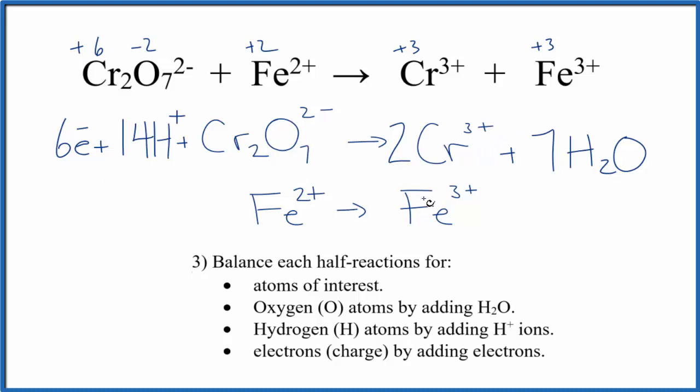Over here, we have a 2+ and a 3+. So let's add a negative charge, just one electron. And then that will give us 2+ on this side, 2+ on this side. So we balance the charge.